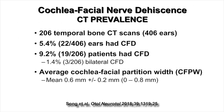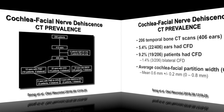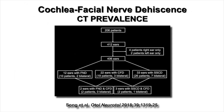The most recent study, published in 2018 by Nick Blevins' group at Stanford, looked at normal temporal bone CTs and found 5.4% — 22 of 406 ears — had cochlea facial nerve dehiscence. By patient number, 19.2% had the condition, with 1.4% having bilateral involvement. Of the 406 ears, 12 had facial nerve dehiscence, 22 had cochlea facial nerve dehiscence, and 33 had superior semicircular canal dehiscence. Two ears had both facial nerve dehiscence and cochlea facial nerve dehiscence, and three ears had both superior semicircular canal dehiscence and cochlea facial nerve dehiscence.